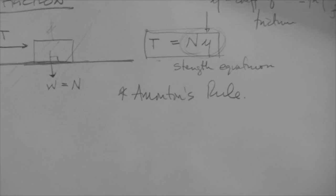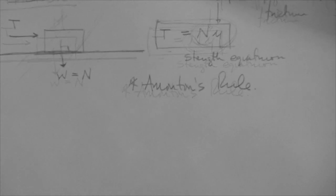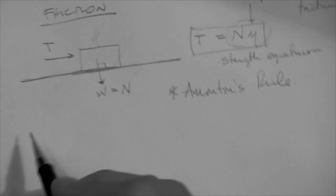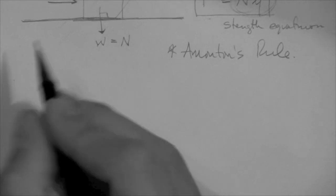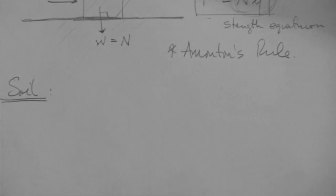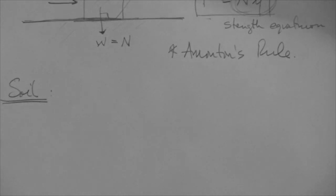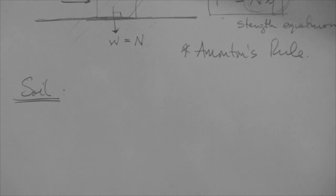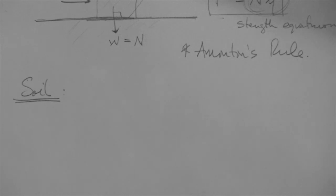Soil. Soil is a material that is made of particles. And probably you have seen in the lab that when we impose a failure condition on a soil specimen with a direct shear test, what we do is impose a shear stress so high that the material essentially fractures or ruptures along a forced failure plane that is horizontal.